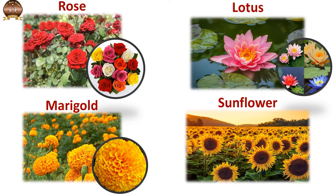Next comes the sunflower. The unique feature of sunflower is it changes its direction according to the sun. As the sun rises and sun sets, it turns according to the sun's movement.